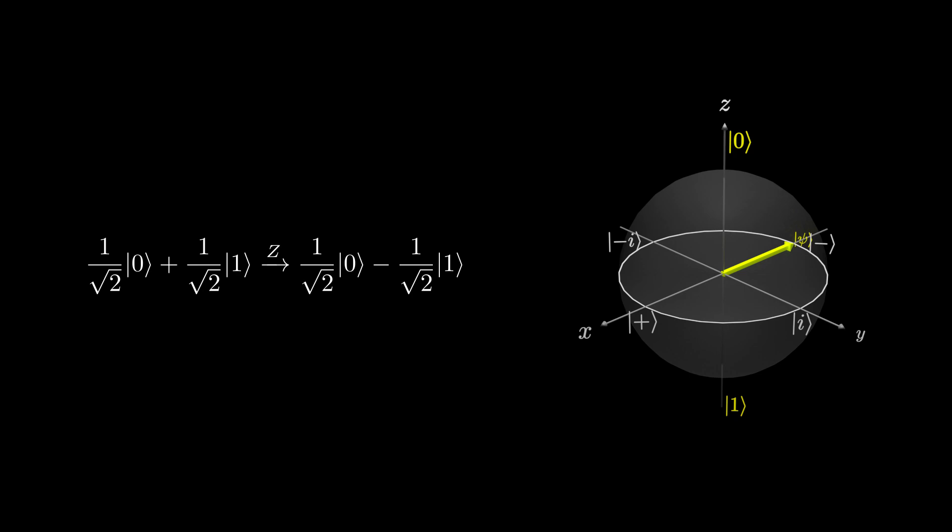If we represent the negative 1 as a complex number in exponential form, we get e^(iπ). Notice how the angle of the complex number is π radians.